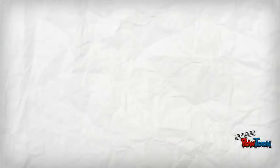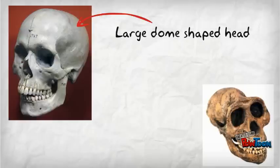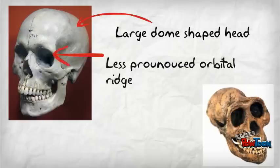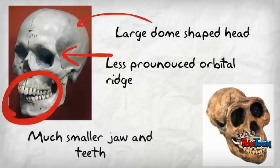So what are the differences? One, notice our large, rounded skull. Two, less pronounced orbital ridge. Three, much smaller jaw and teeth.